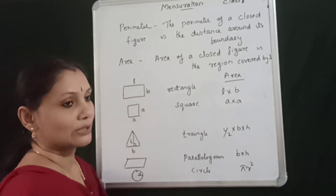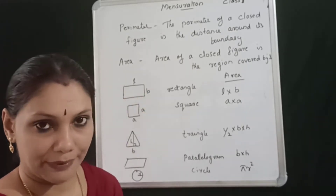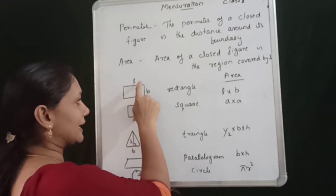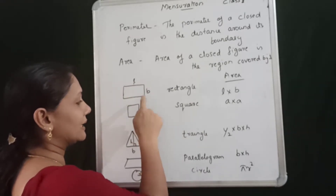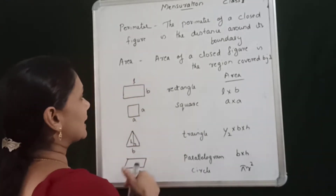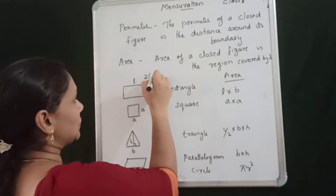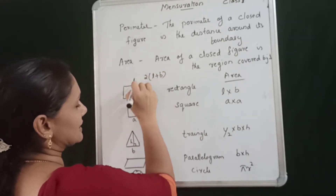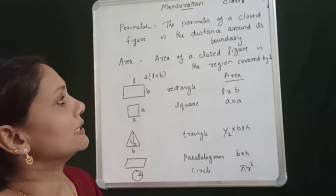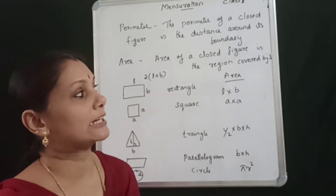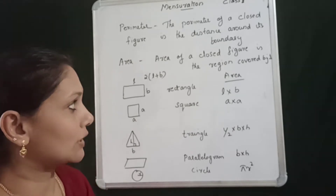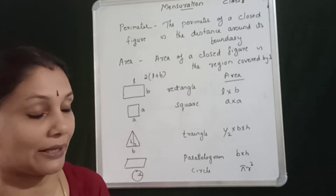We have a rectangle. What is perimeter? It is a boundary. The sides are L and L. The perimeter of a rectangle is 2 into L plus B. The perimeter of a closed figure is the distance around its boundary — total distance is the perimeter.